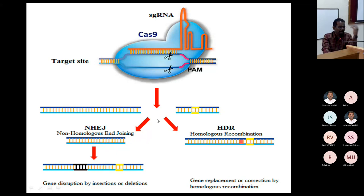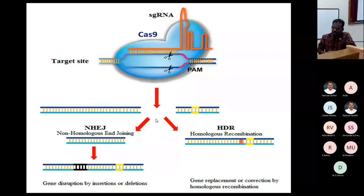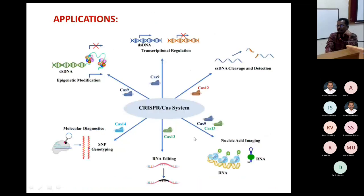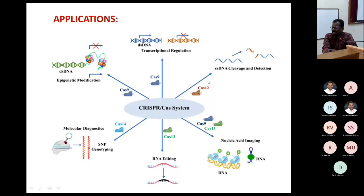This CRISPR-Cas system is very precise. Unlike random transformation, here I know the cotton sequence — completely available in the data bank — so I can custom design the guide RNA to direct my gene to integrate at a specific site. The main purpose of CRISPR now is gene knockout to identify economically important genes. Applications include epigenetic modification, on/off mechanism of gene expression with Cas9, single-strand DNA cleavage with Cas12, nucleic acid imaging with Cas9/Cas13, RNA editing with Cas9/Cas13, and molecular diagnosis or SNP genotyping. One of the first CRISPR-edited crops was a Japanese tomato, published in 2021 and available in the market. Researchers are working on introducing drought-resistant genes, pest resistance, and other quality improvements. The first CRISPR crops expected to be commercialized is a waxy corn with increased amylopectin content.